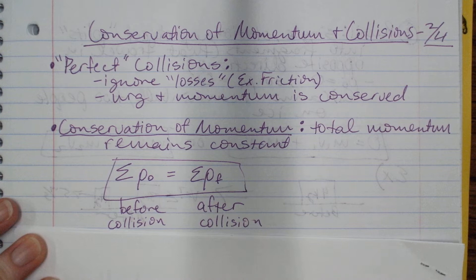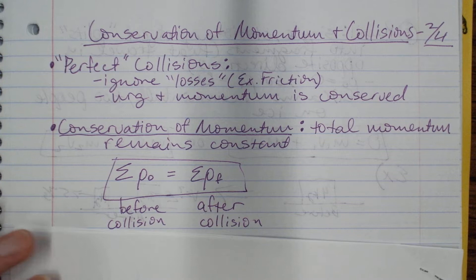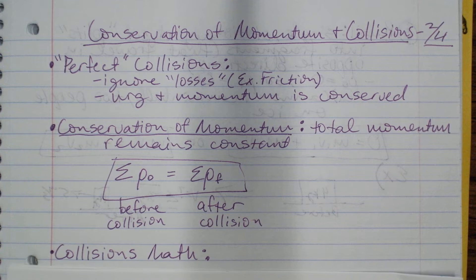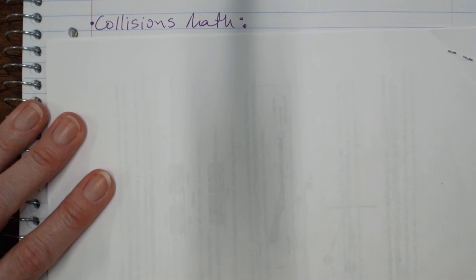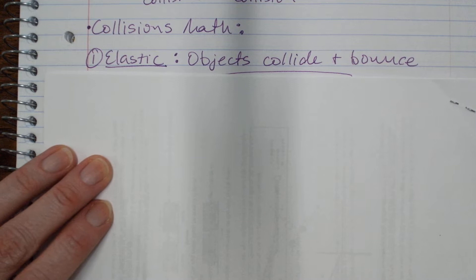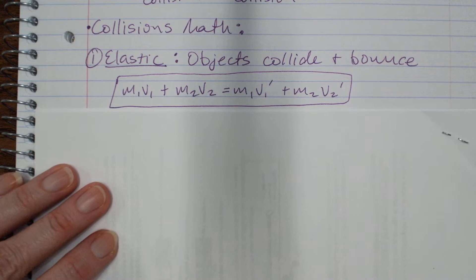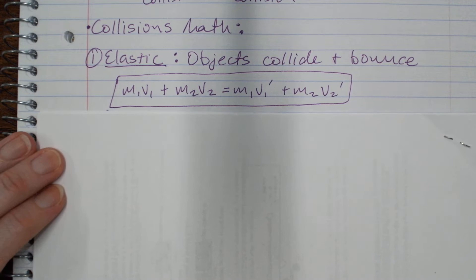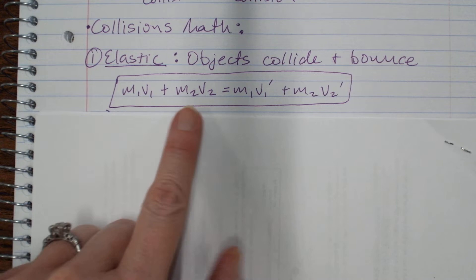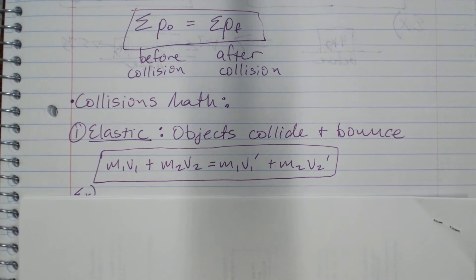There are a couple of equations you'll need to memorize — one is on your formula sheet but the rest are not. For elastic collisions, objects collide and bounce. The equation on your formula sheet uses m for mass in kilograms and v for velocity in meters per second. We're saying the sum of momentum before equals the sum of momentum after.